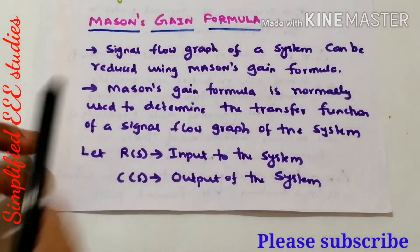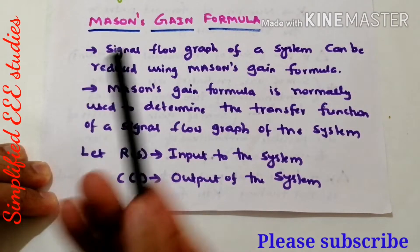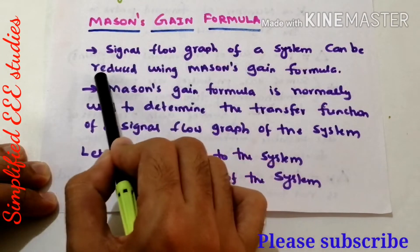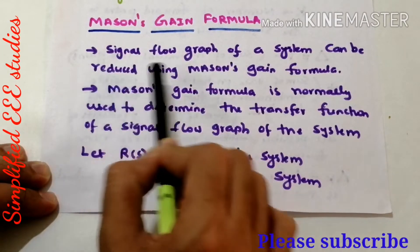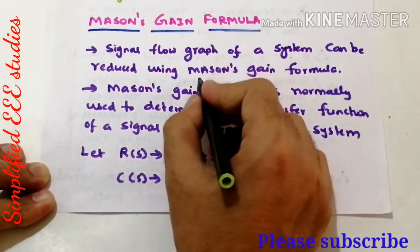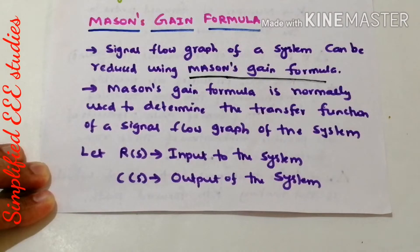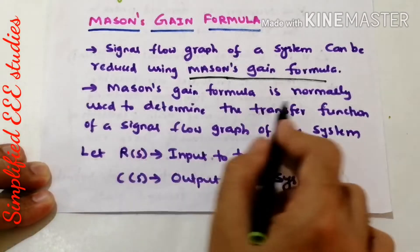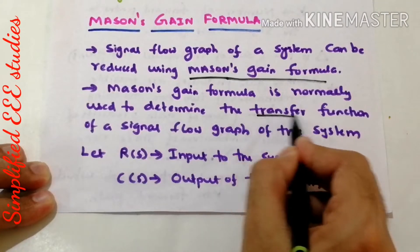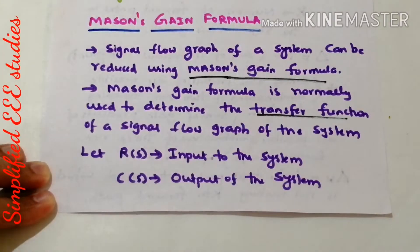What do you mean by Mason's gain formula and what is the importance of this formula? The signal flow graph of a system can be reduced by using this popular formula, namely Mason's gain formula. Mason's gain formula is normally used to determine the transfer function of the signal flow graph of the given system.